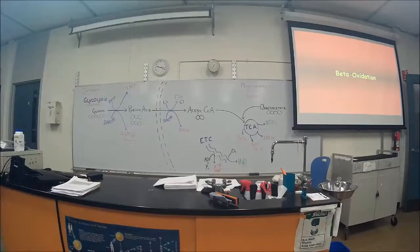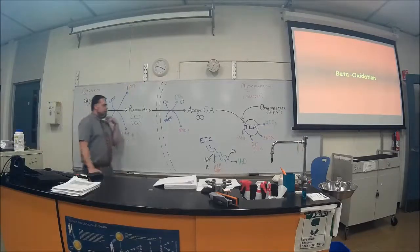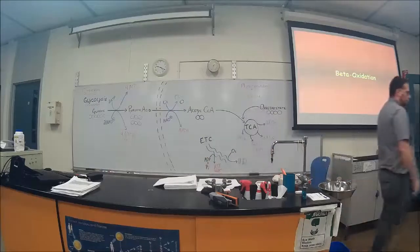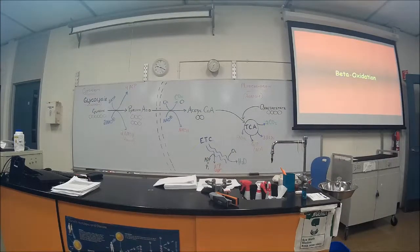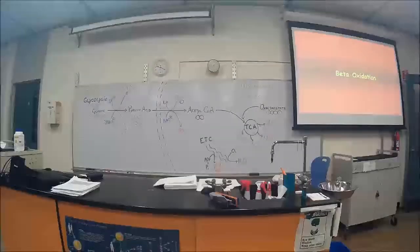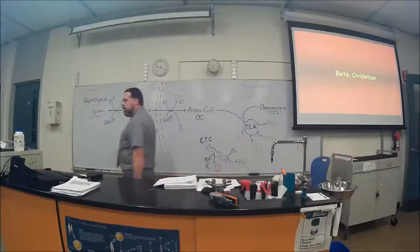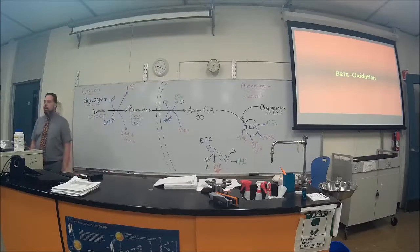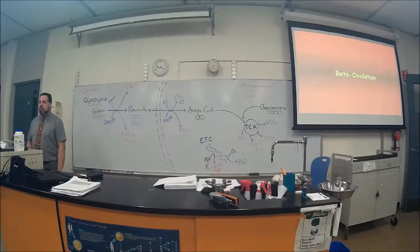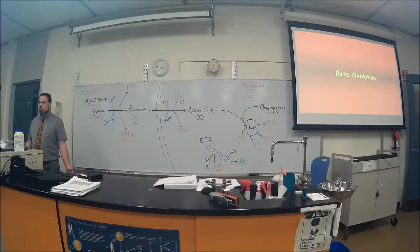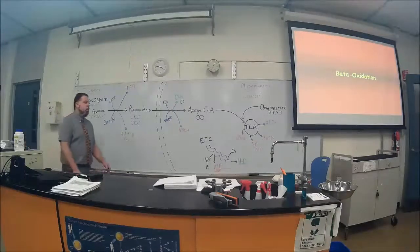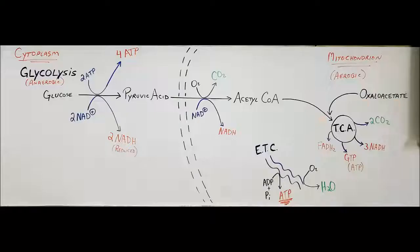So do you understand this? If I said, if we have three bouts of acetyl-CoA entering the citric acid cycle, if three bouts of acetyl-CoA enter that, how many NADHs are made? Nine. Does that make sense? Alright? Not hard. It's easy once you've got this picture up there.